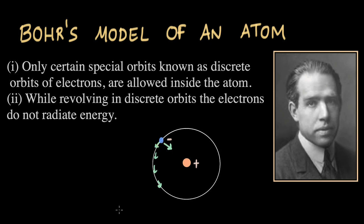We saw the drawbacks of the Rutherford model. If an electron is orbiting around a nucleus, it means it's accelerating. And if a charge accelerates, it must radiate energy.